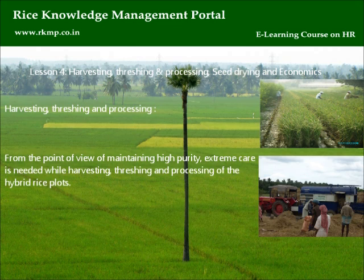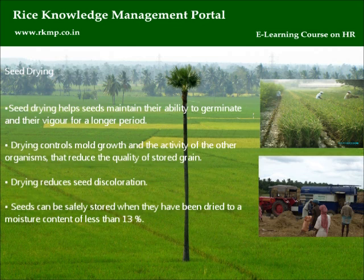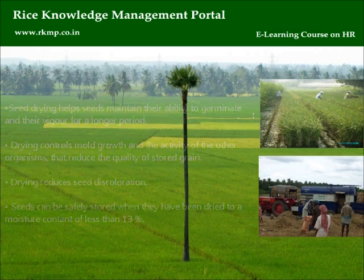Lesson 4: Harvesting, Threshing and Processing, Seed Drying, and Economics. From the point of view of maintaining high purity, extreme care is needed while harvesting, threshing, and processing of hybrid rice plots. Seed drying helps seeds maintain their ability to germinate and their vigor for a longer period. Drying controls mold growth and the activity of other organisms that reduce quality of stored grain, and reduces seed discoloration. Seeds can be safely stored when dried to a moisture content of less than 13%.